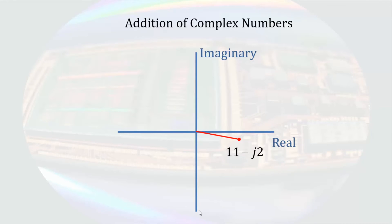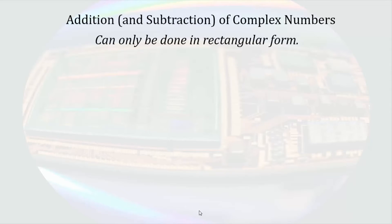When adding complex numbers, we have to add the real components of each of the numbers, and then add the imaginary components of each of the numbers we are adding. And we have to keep them separate. That means we can only do addition and subtraction of complex numbers in rectangular form.